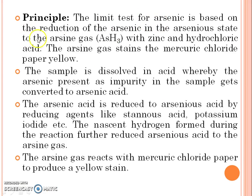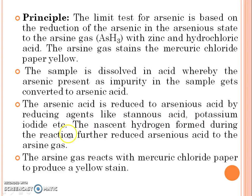Principle. The limit test for arsenic is based on the reduction of arsenic in arsenic acid to arsenic gas with zinc and hydrochloric acid. The sample is dissolved in acid, by which the arsenic present as an impurity in the sample gets converted into arsenic acid. The arsenic acid is reduced to arsine by a reducing agent like stannous chloride as well as potassium iodide. The nascent hydrogen formed during the reaction further reduces arsenic acid to arsenic gas.